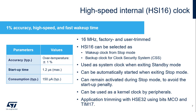The high-speed internal oscillator, or HSI, is a 16 MHz RC oscillator which provides 1% accuracy and fast wake-up times. The HSI is trimmed during production testing and can also be user-trimmed. It can be selected as clock at wake-up from system stop, and as the backup clock if an HSE failure is detected by the clock security system. The HSI is selected as system clock at wake-up from standby mode. It can remain powered when the system goes to stop mode to speed up wake-up time, and used as a kernel clock by peripherals in stop mode. Some peripherals, such as the I2Cs, USART, LP-UART, and LP-TIMs, can select the HSI as kernel clock. The HSI frequency can be trimmed versus HSE by using the MCO and TIM 17 bits in capture mode.